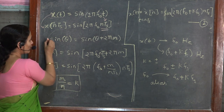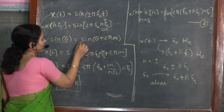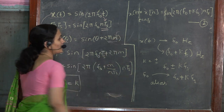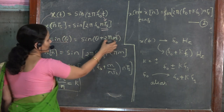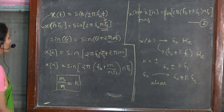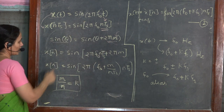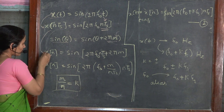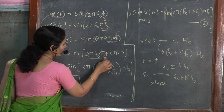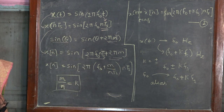We know the trigonometric relation that sin θ is nothing but sin(θ + 2πm), provided that m should be an integer. If this relation is followed then this particular identity holds true. Using this identity, I can revisit the equation and write x of n as sin(2π f₀ nTs + 2πm), provided again that m should be an integer.